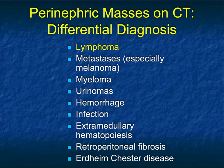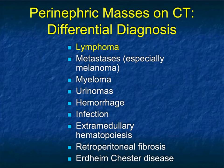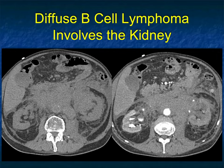Perinephric masses can also occur with melanoma, though those are usually more well-defined. Other causes include urinomas, hemorrhage, extramedullary hematopoiesis, retroperitoneal fibrosis, and Erdheim-Chester disease — with Erdheim-Chester, you also see infiltration around the aorta and in the femur. So perinephric disease has a number of causes, but with lymphoma, you can usually be very specific.